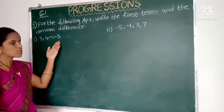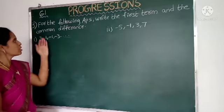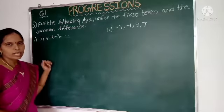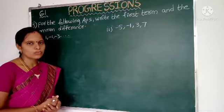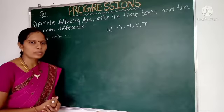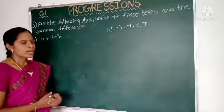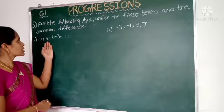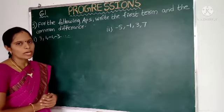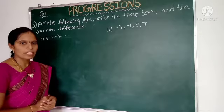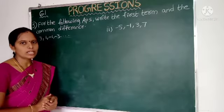Here, four terms are there. We need to find the first term and common difference. In previous classes, we found the first four terms by using the first term and common difference. Here, in this sum, we are given the first four terms. From the first four terms, we need to find the first term and common difference — that is, the A value and D value.